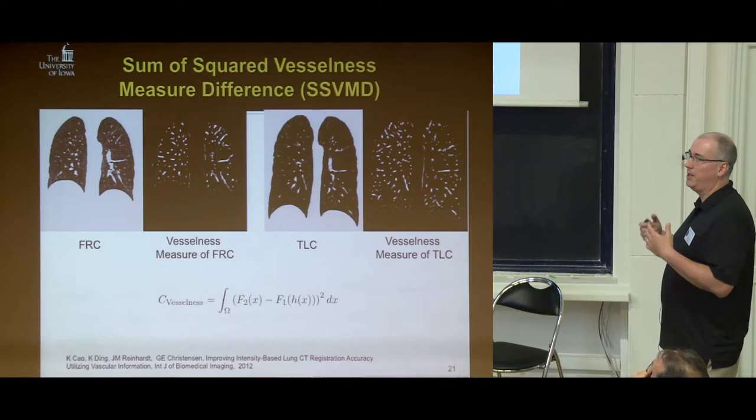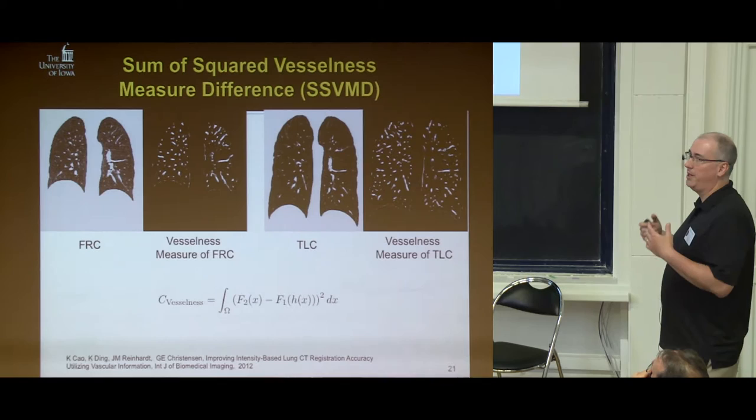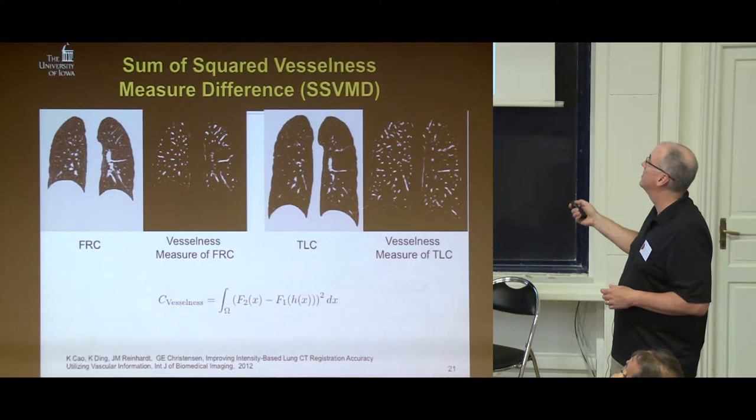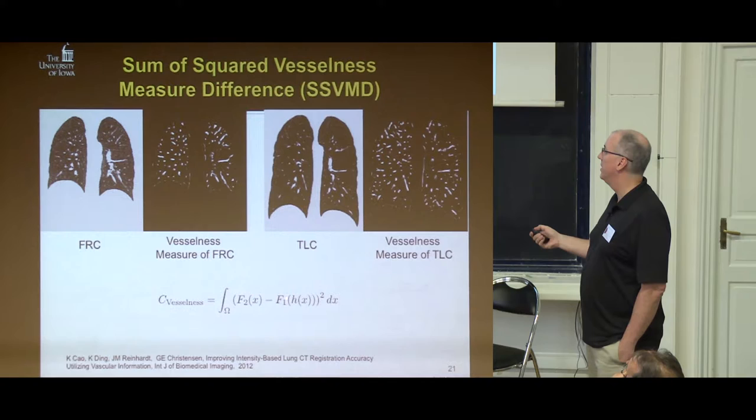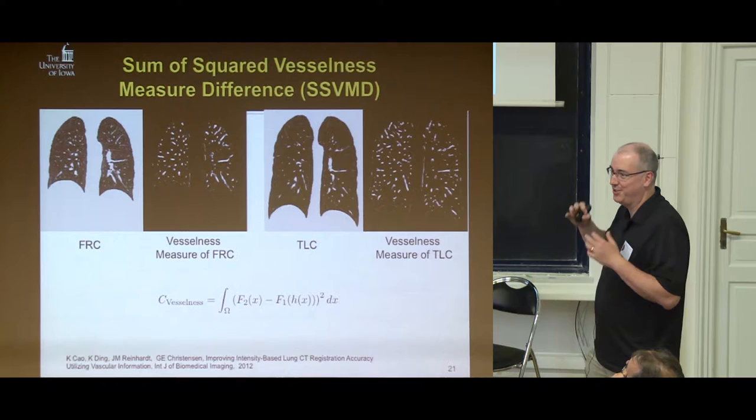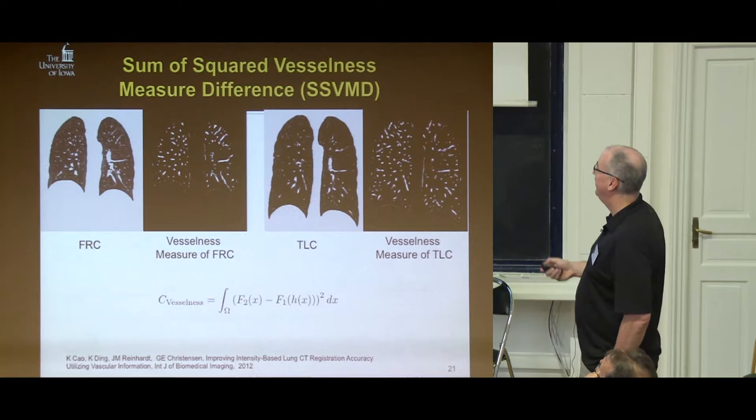We apply this Frangi vesselness filter to our CT images and use that as another image input to our registration — I'll call this F1 and F2 for the vesselness. Then we added a regularization term that basically penalizes any rough transformation. Using our displacement field and L as a differential operator, if you take large derivatives you have a high cost — so the higher the derivatives of your displacement field, the higher the cost.